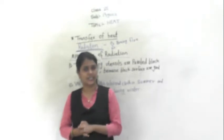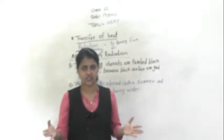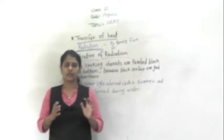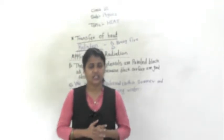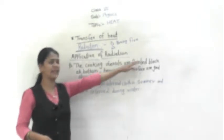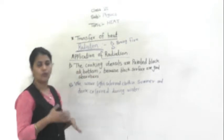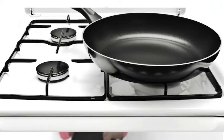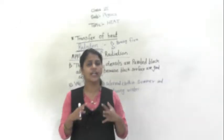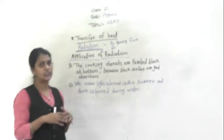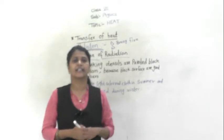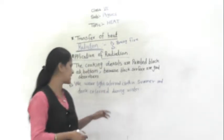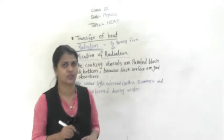Can you give a day-to-day life example of radiation? You might have observed cooking utensils — they are painted black at the bottom. Why? Because black surfaces are good absorbers of heat. While shiny or smooth silver surfaces are good reflectors — they can reflect heat, meaning they are bad absorbers.